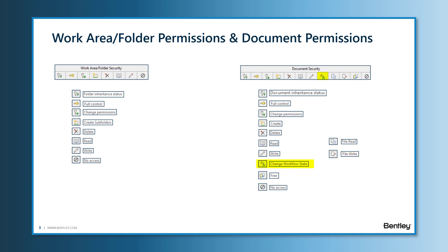The Change State option will allow users to move the document from one workflow state to another. If this option is not enabled, the Change State previous or next will be grayed out and users cannot move the document to the previous or next state of the workflow. Free — this option is particularly useful as it allows designated users, for example team leaders or supervisors, to be able to free and unlock their team members' documents.